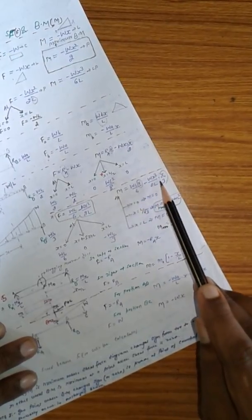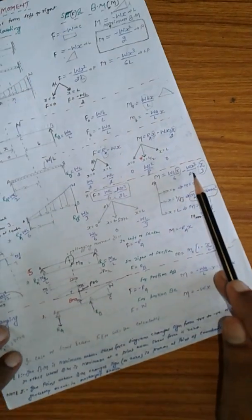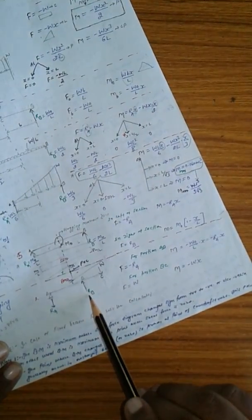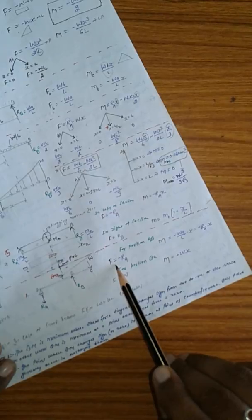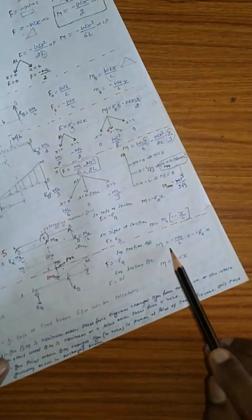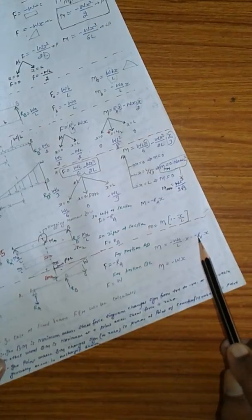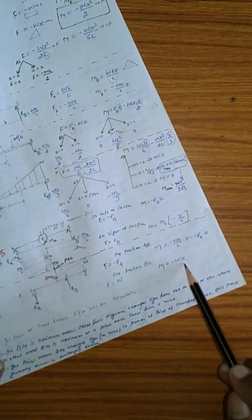This is the general case. And in case of overhanging beam, this is the overhanging beam case. In this case, Fx, that is shear force, is minus Ra. Moment is minus Ra into x. And F is equal to w, and M is equal to minus wx.